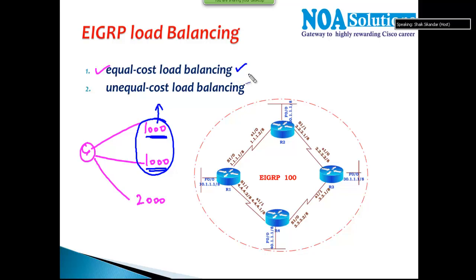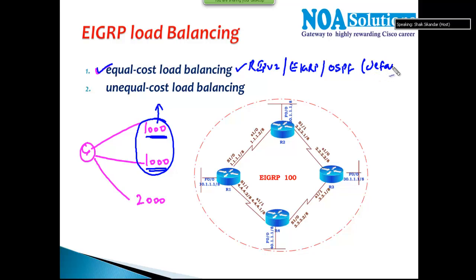This is called equal cost load balancing, where load balancing happens between two routes with the same cost. By default, RIP version 2 supports this based on hop count. EIGRP also supports equal cost load balancing and OSPF also supports it. This is something every protocol supports by default — whenever they encounter two or more possible routes with equal cost, they do load balancing automatically.